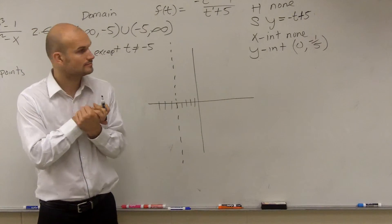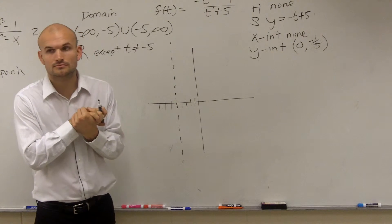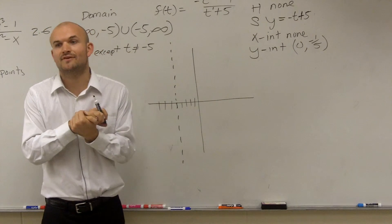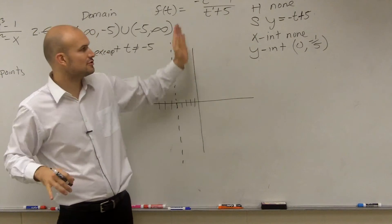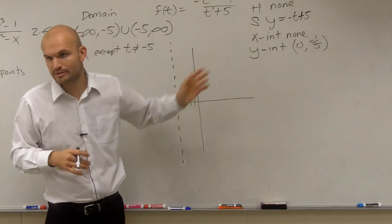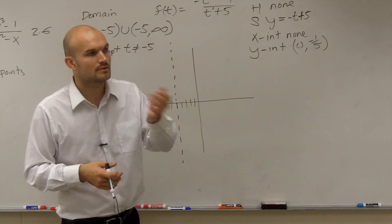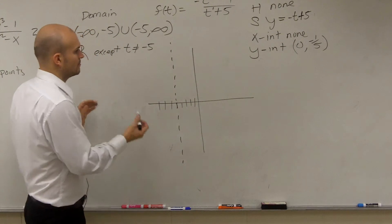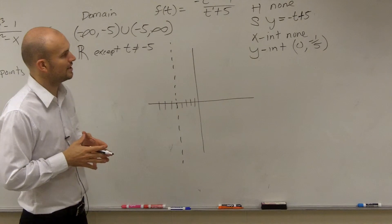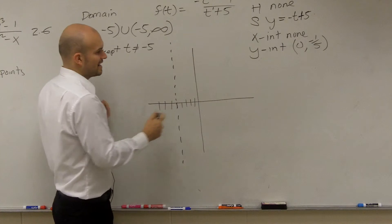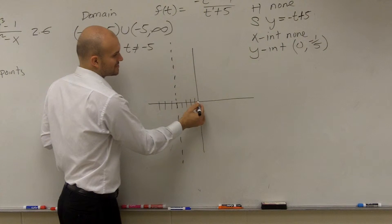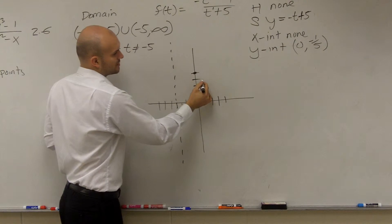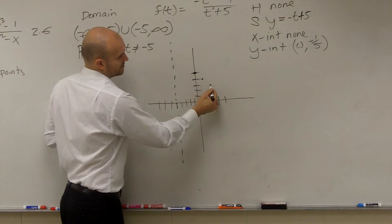Was negative t squared minus one your original problem, or did you distribute something? I distributed the negative sign. It really was t squared plus one divided by t plus five, then multiplied by negative — I just distributed the negative up top. You could distribute the negative on the bottom either way and it's not going to change the problem. So let's see what this graph would look like. I have y equals negative t plus 5. That's how we graph that slant asymptote — up to five, then slope is down one to the right one, down one to the right one.